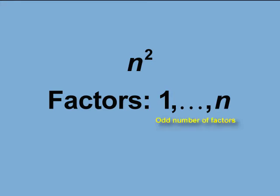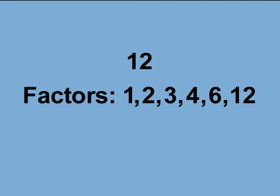Here's why. When you list the factors of a composite number with an even number of factors, for example, the number 12, you can create factor pairs. Here are the factors of 12: 1, 2, 3, 4, 6, 12. Pairs of factors have a product of 12. 1 times 12 equals 12. 2 times 6 equals 12. 3 times 4 equals 12.